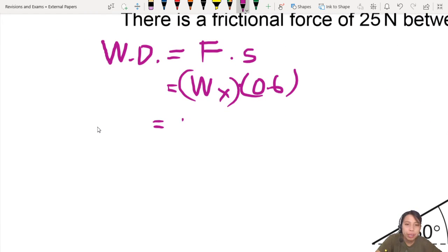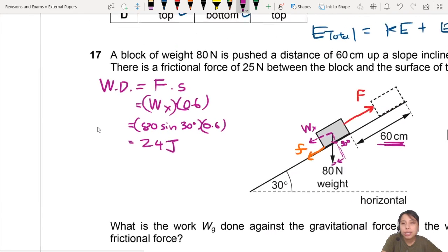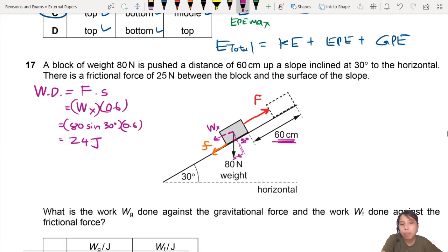So that will be 80 sine 30 times 0.6. That will give you 24 joules of energy that you have to put in to fight the purple force.